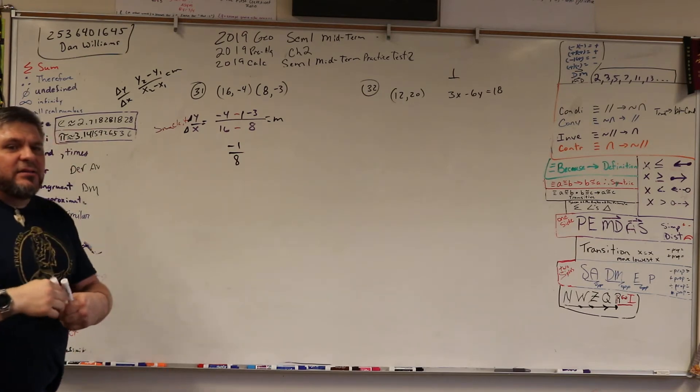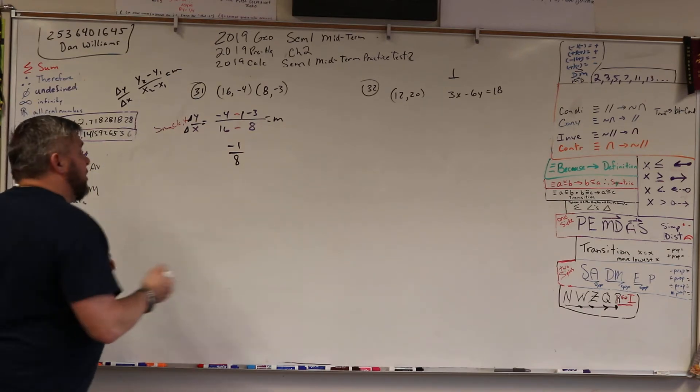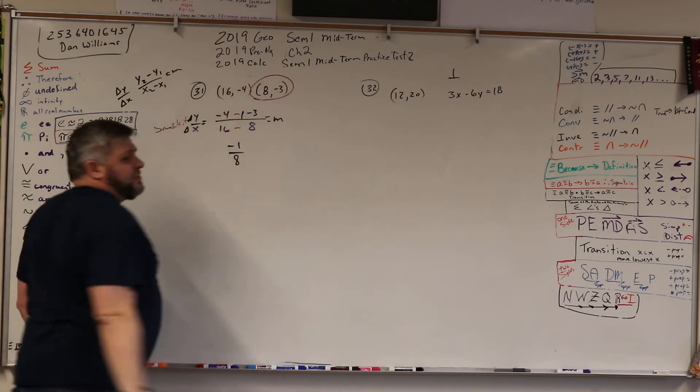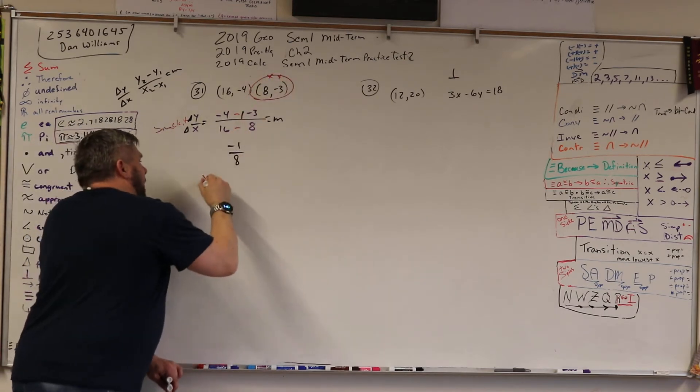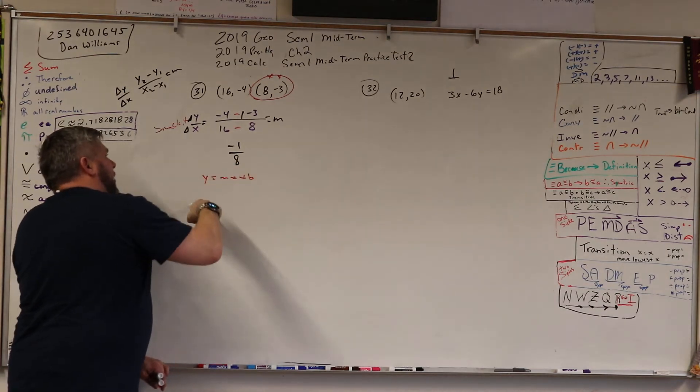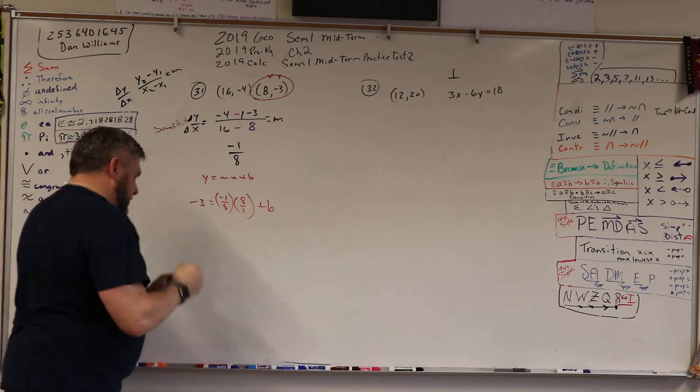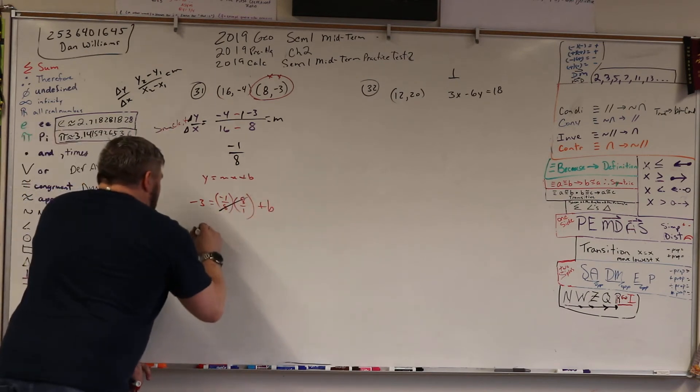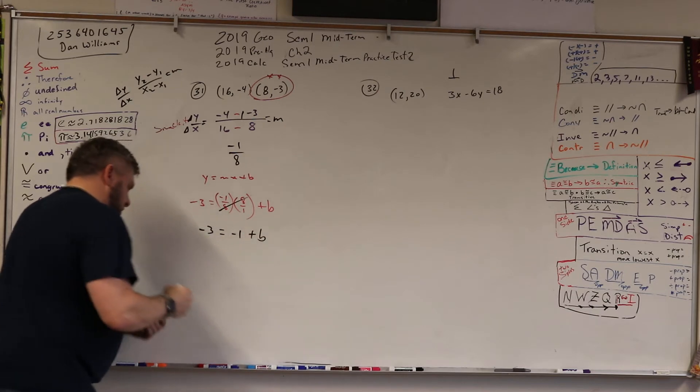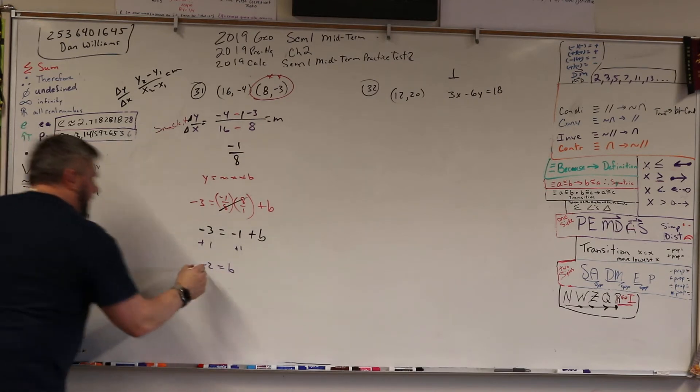Now we need to find the b. So we grab one of these. I don't care which. These numbers are smaller, so let's grab those. Remember, x and y. So y equals mx plus b. So I got y is negative 3 equals m, which is negative 1/8 times x, which is 8 over 1 plus b. Now here, this one turned out pretty easy because the 8's cancel. So I get negative 3 equals negative 1 plus b. So then I add 1 and I get negative 2 equals b.